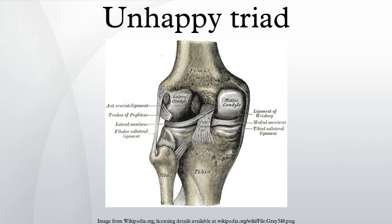Skeletal components involved in the unhappy triad include the patella, femur, and tibia. No muscles are directly involved in this injury, only ligaments.